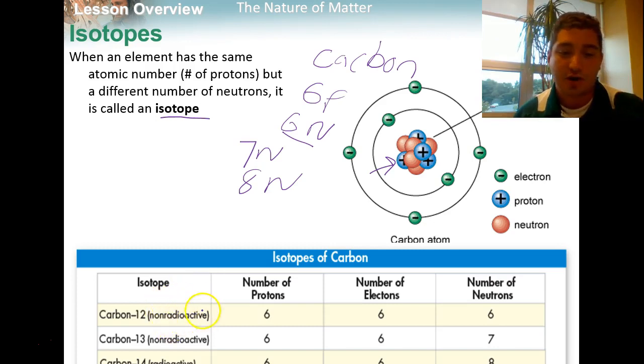If we look here in this chart, we see carbon 12 has six protons, six electrons, six neutrons, normal. Carbon 13 has six protons, because it's still carbon, the atomic number is six, six electrons, but seven neutrons. And finally down here, a little cut off, but carbon 14 has six protons, again, atomic number of six, six electrons, and eight neutrons.